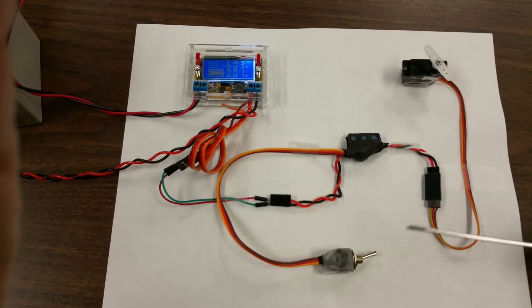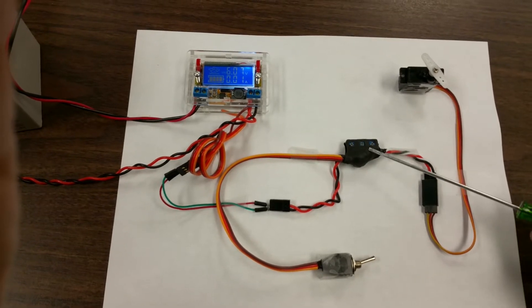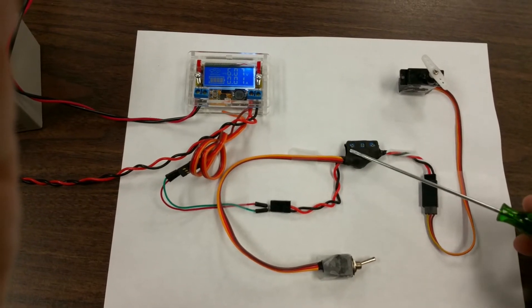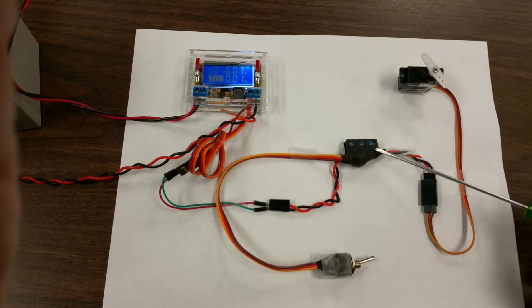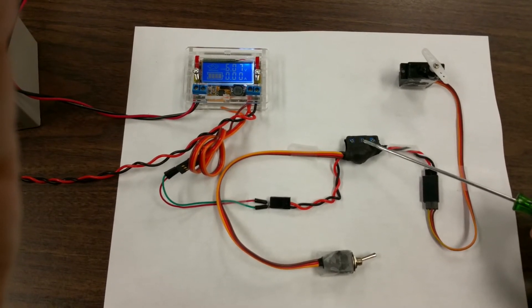So we have a three position toggle switch, the controller. There's one endpoint, there's the other endpoint, and the middle one is the speed that the servo can move.